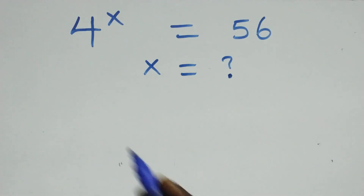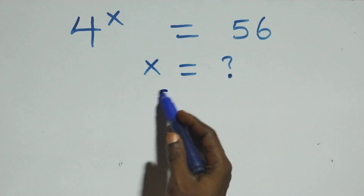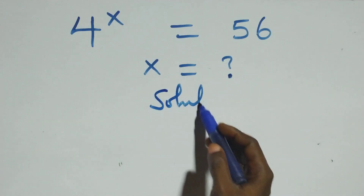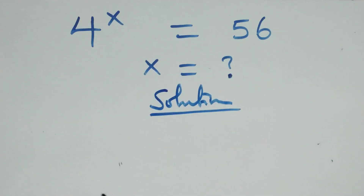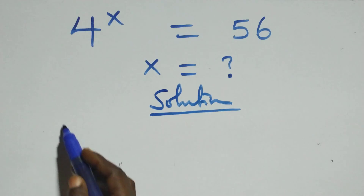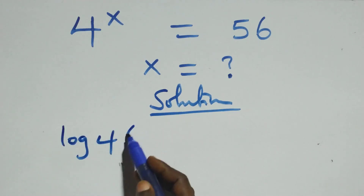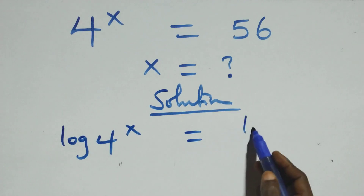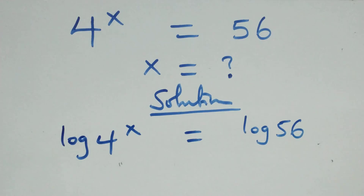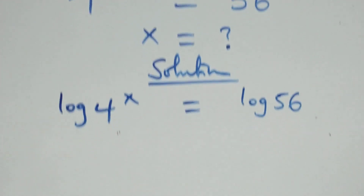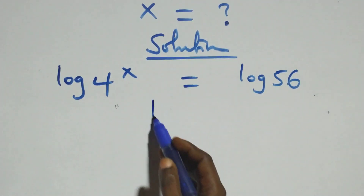Hello, you are welcome. Let's solve this nice exponential equation. From here, we take the log on both sides, so we have log of 4 raised to power x equals log 56 on this side. The next step, we apply the power rule of logarithms.